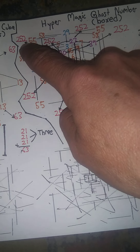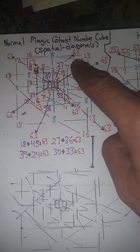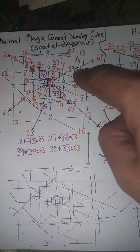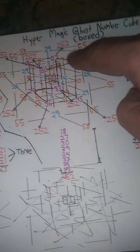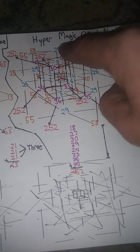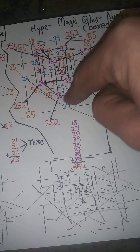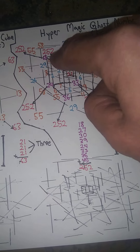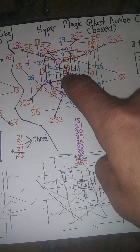Two together to create 252. This is a normal magic ghost number cube with spatial diagonals — nothing changes on this, and nothing changes on the inner ghost number cube. This is the box of the spatial diagonals. Nothing changes on the inner cube or their relationship to each other — all the numbers stay the same. These numbers on the other hand change because you're using the central ghost number in between the property for the outer ghost number cube.